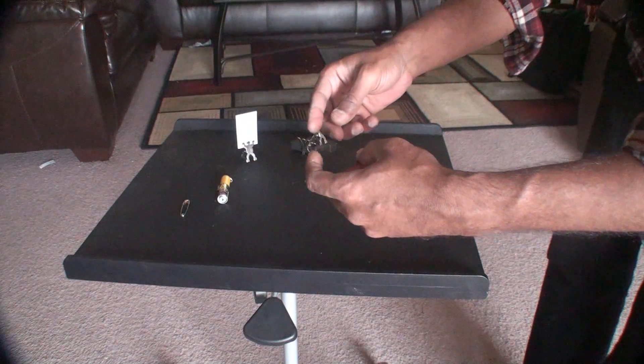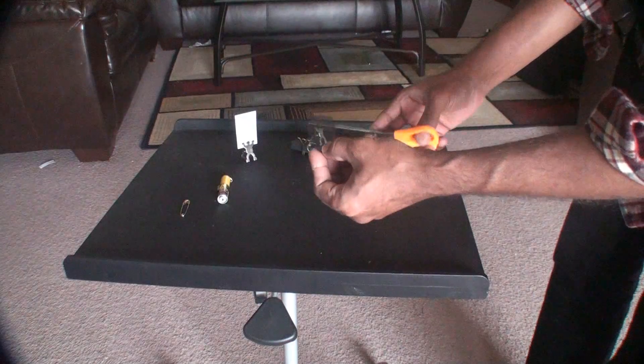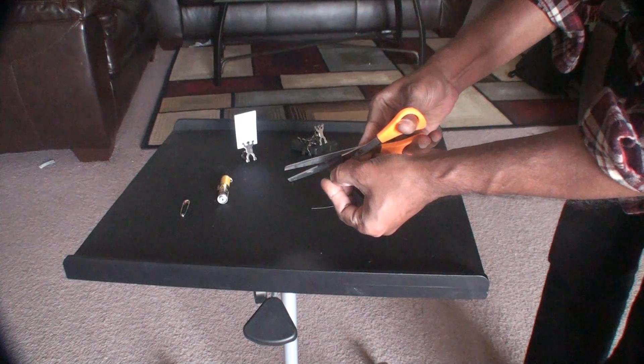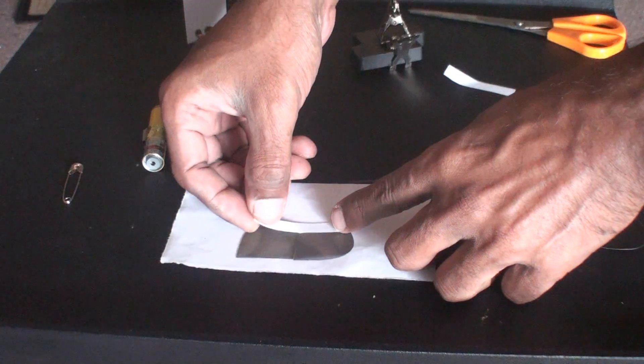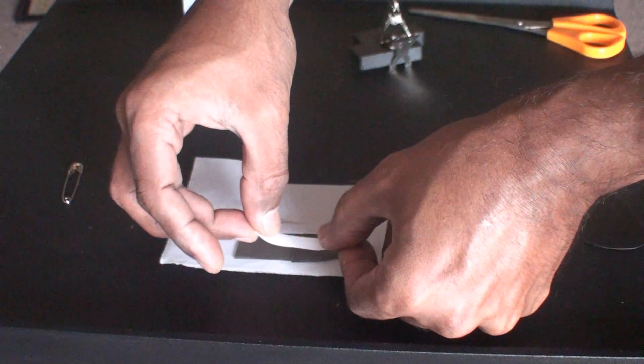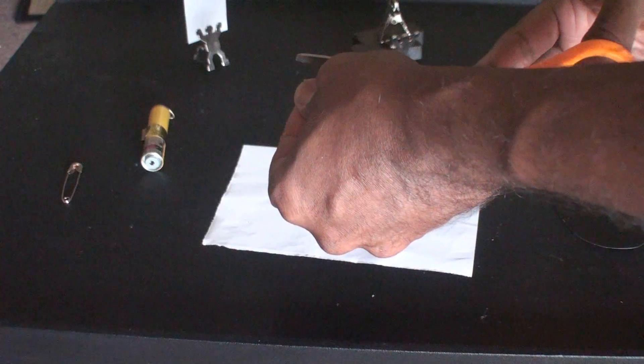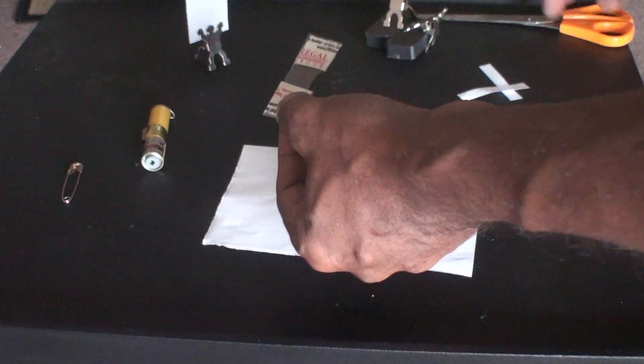Next, set up the measuring polarization filters. Cut one filter and rotate one to 90 degrees to make it in opposite directions. Verify it using the other filter. Make this into a hard thick paper using tape. Our measurement device is ready. Check it one more time using the other filter.